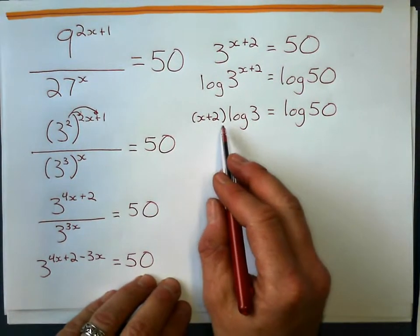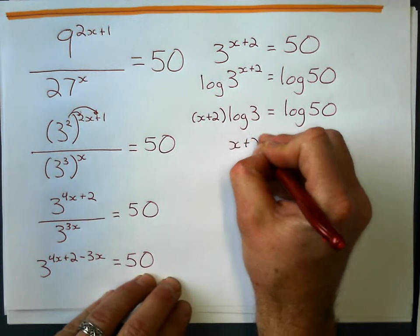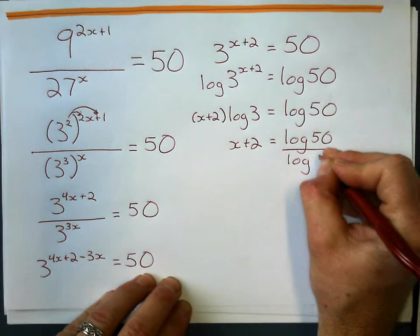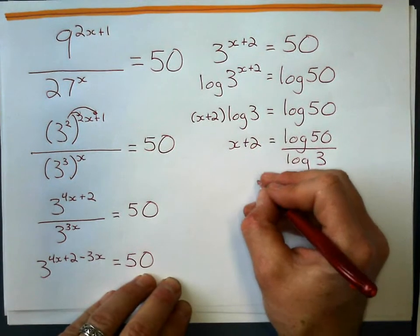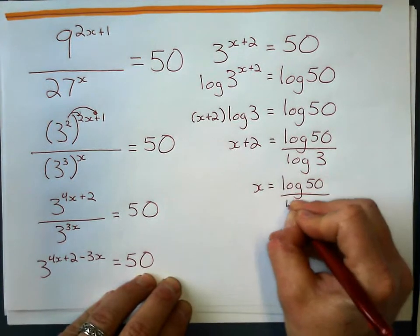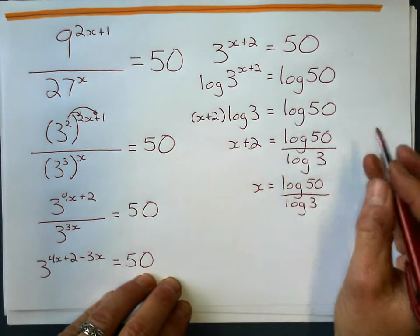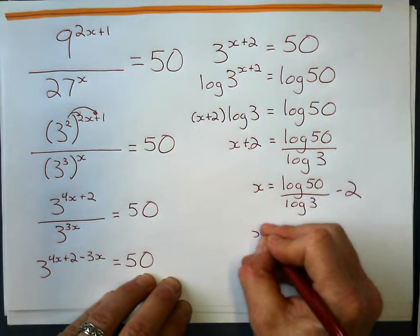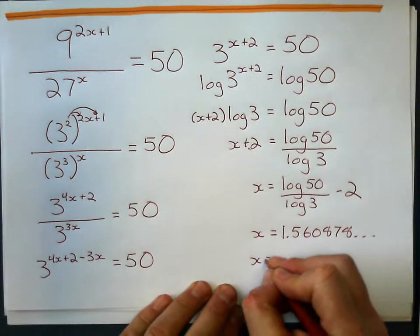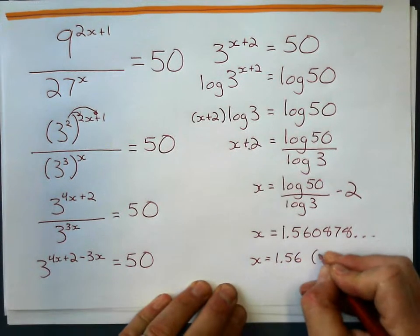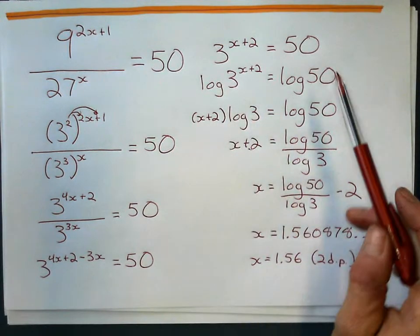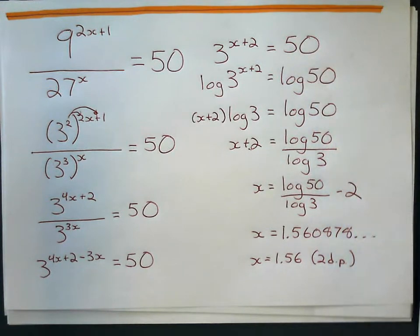And now, to get x plus 2 by itself, I'm going to divide by log 3. So x plus 2 equals log 50 divided by log 3. And I'll work that out on the calculator in a bit, but I know that the value of x is going to equal log of 50 divided by log of 3, opposite of plus 2 is minus 2. And I'll work that out on the calculator. And I get 1.56 something, and I'll just say 1.56 to 2 decimal places. So that one I did use logarithms because I'm solving for the exponent and I can't write 50 as a power of 3. So that's what logarithms are for.